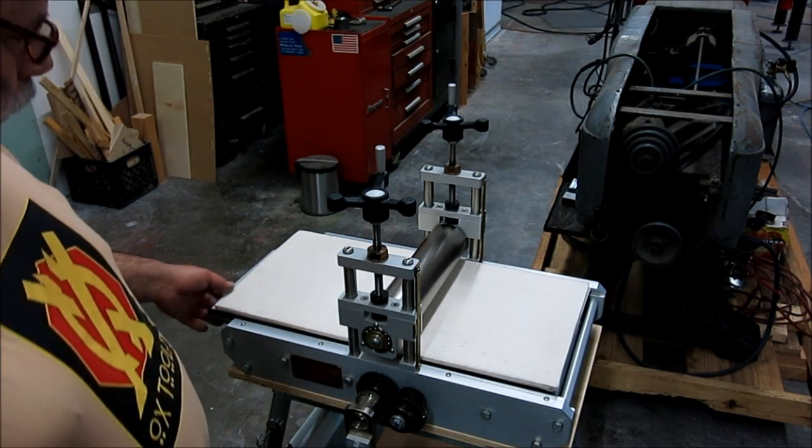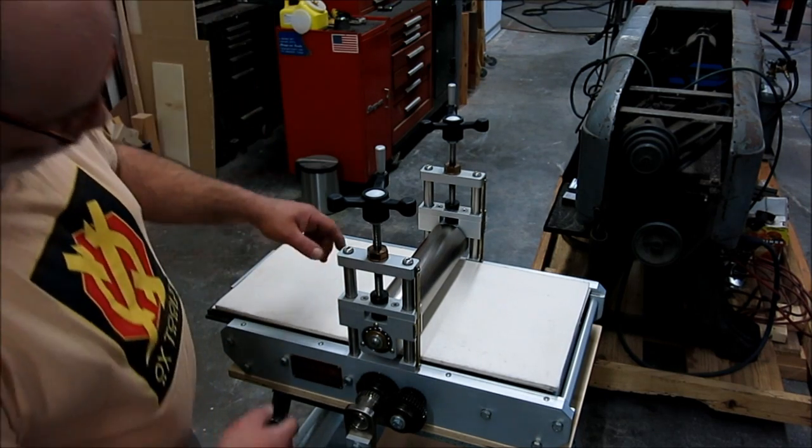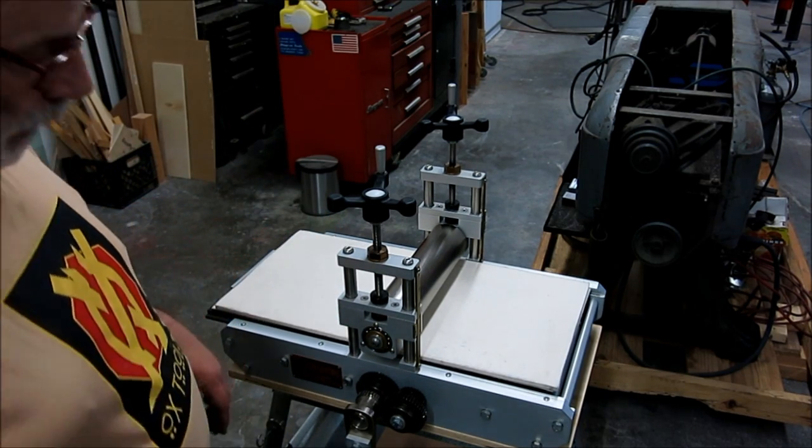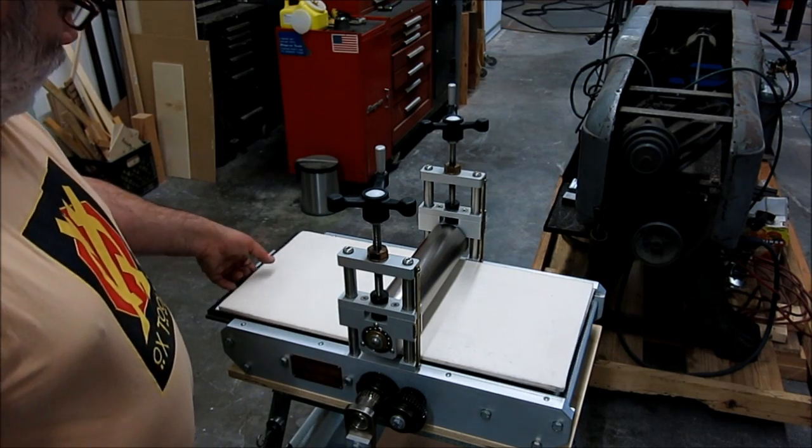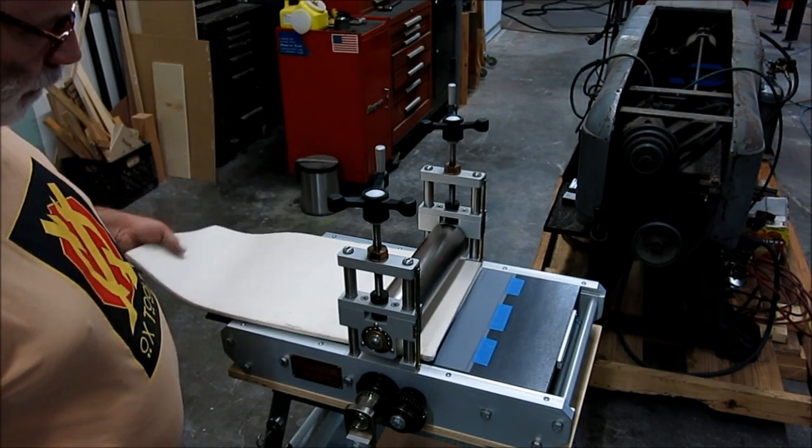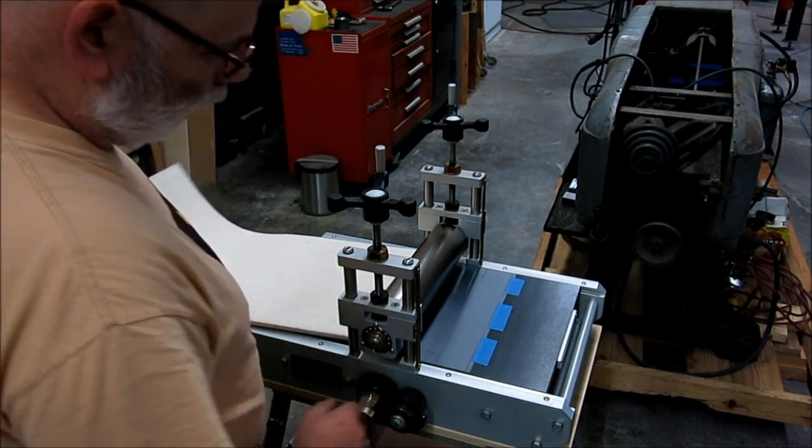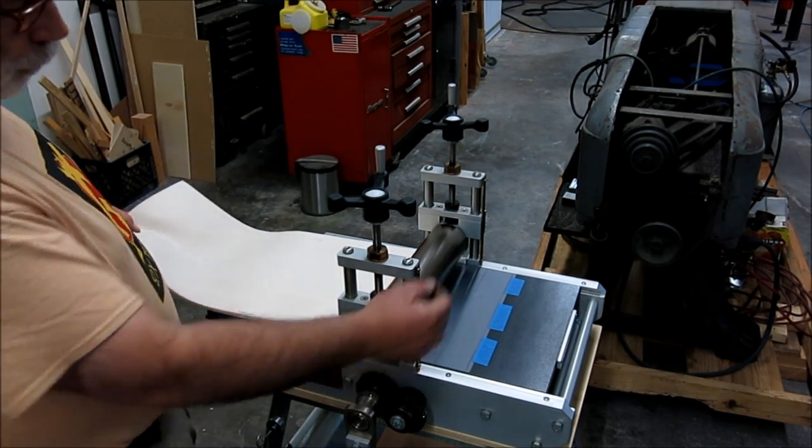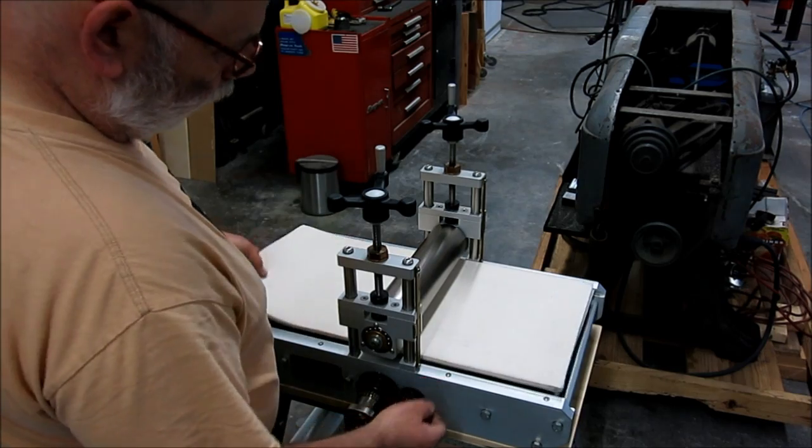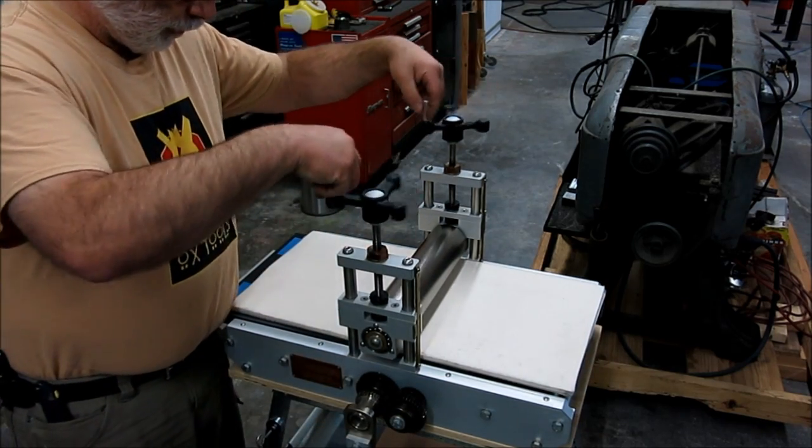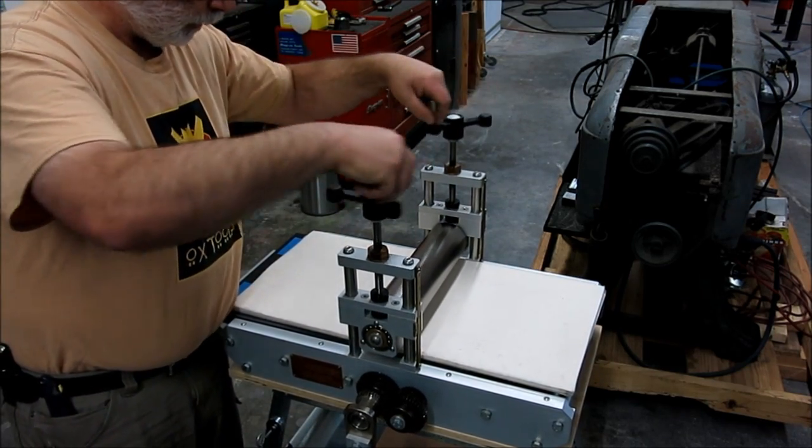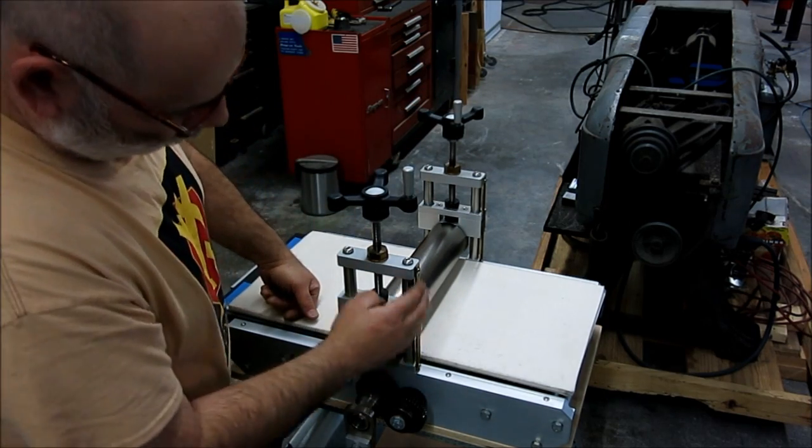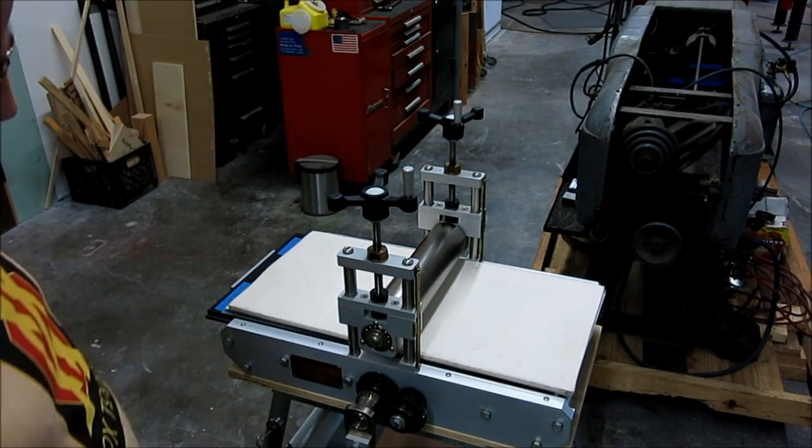So the basic functionality of this is, and I'll move the camera around so you guys can see it, it's got some felt blankets and it's got a bed here. And there's two rolls like a clothes ringer and then you can move the rolls up and down like so. Now these are independent here and there's some little scales on the side.